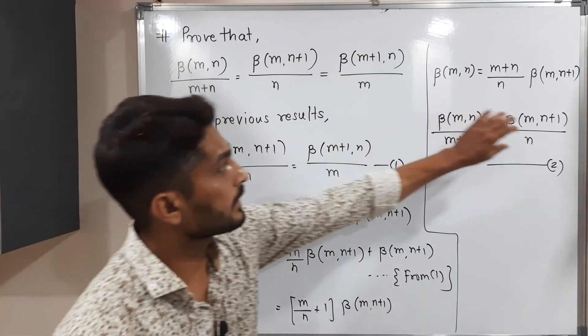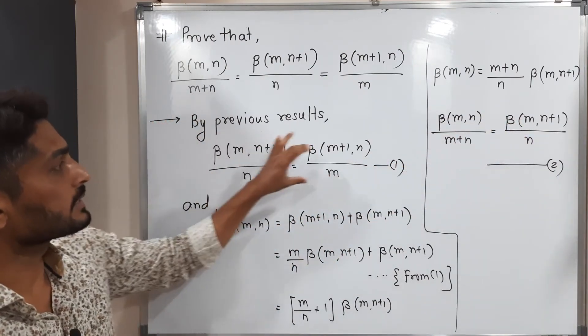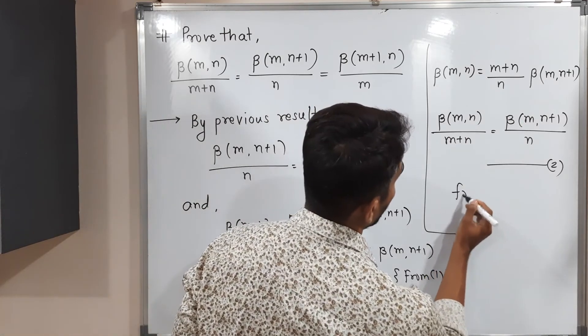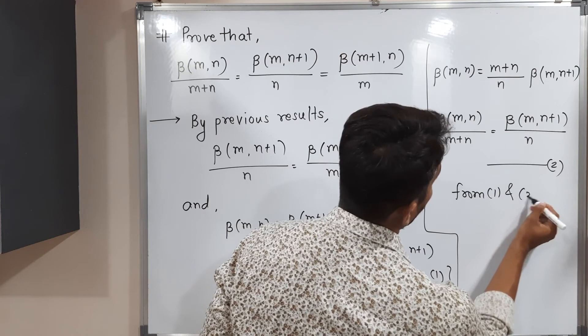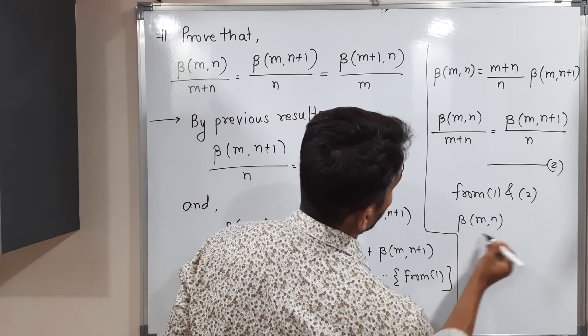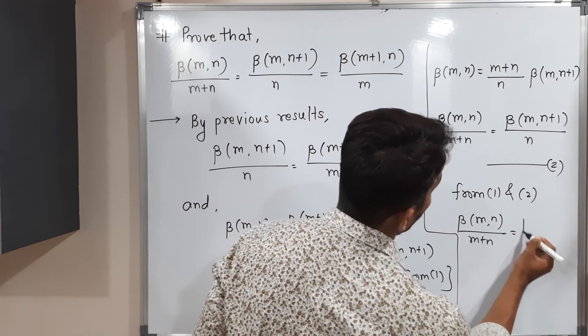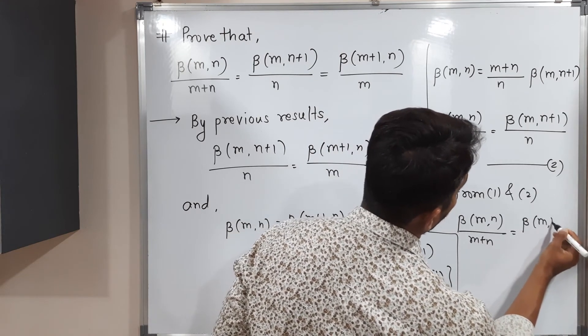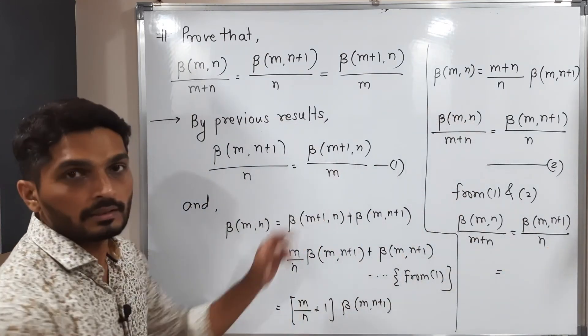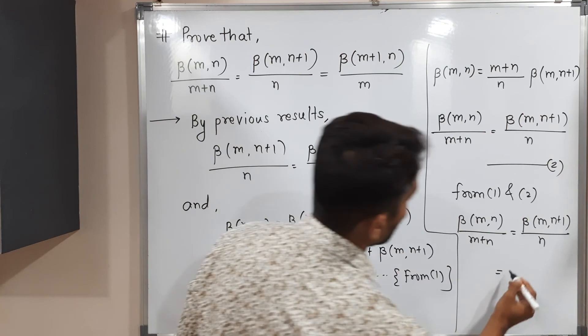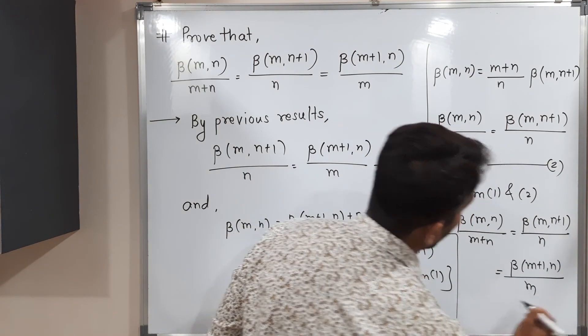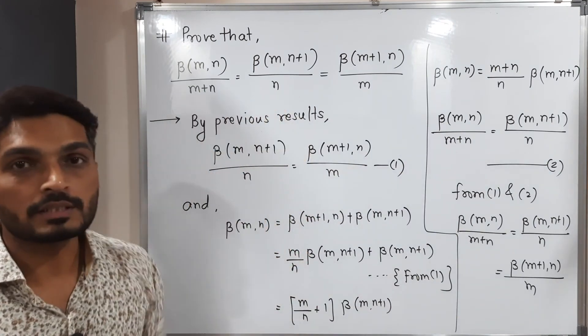This one is equal to this one, but we have already said this one is equal to that one. So if you combine equations 1 and 2, we start with: beta of m, n divided by (m+n) is equal to beta of m, n+1 divided by n, which is equal to beta of m+1, n divided by m. In this way we proved this result.